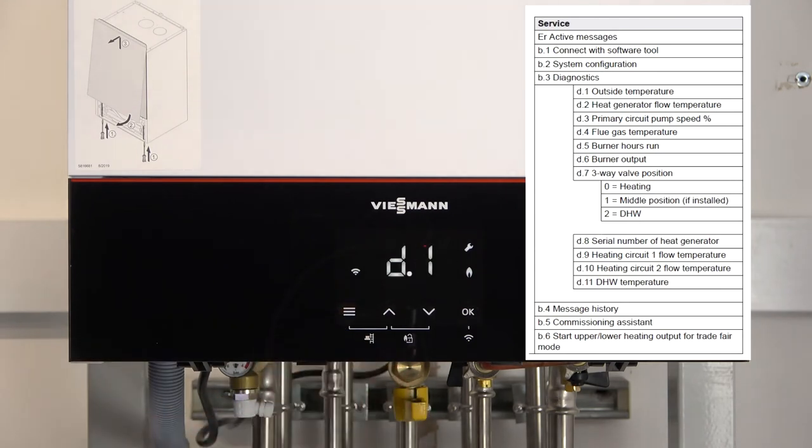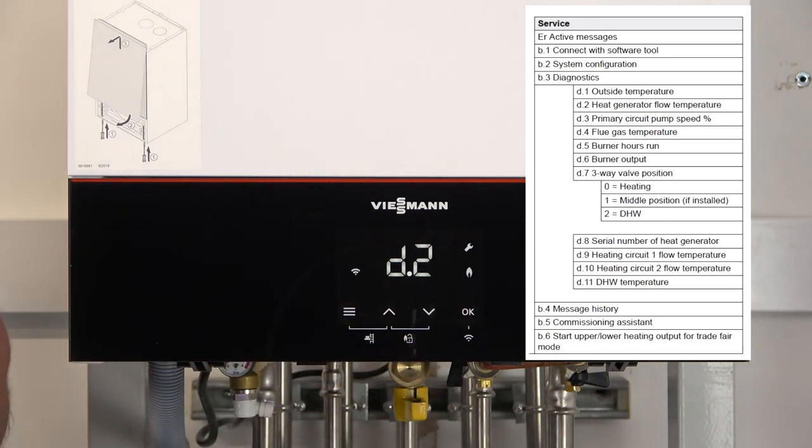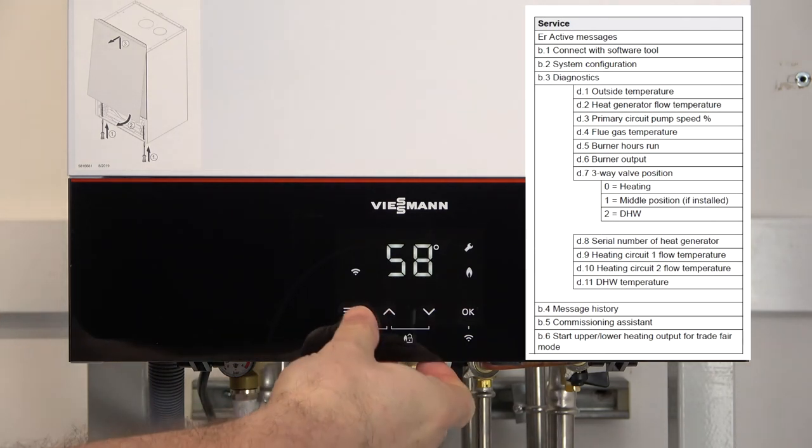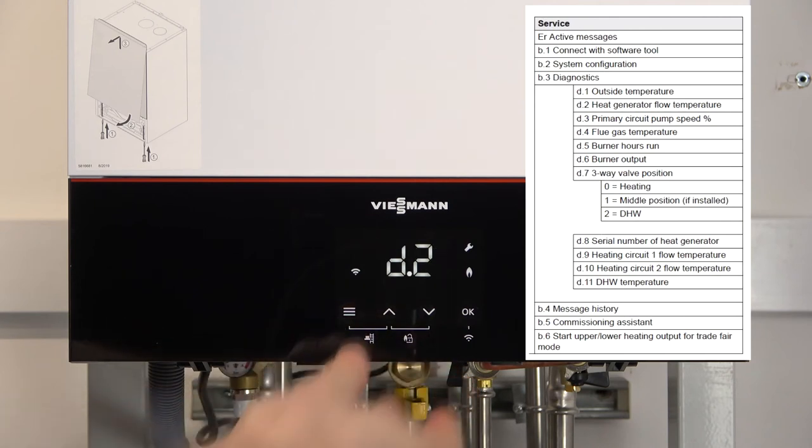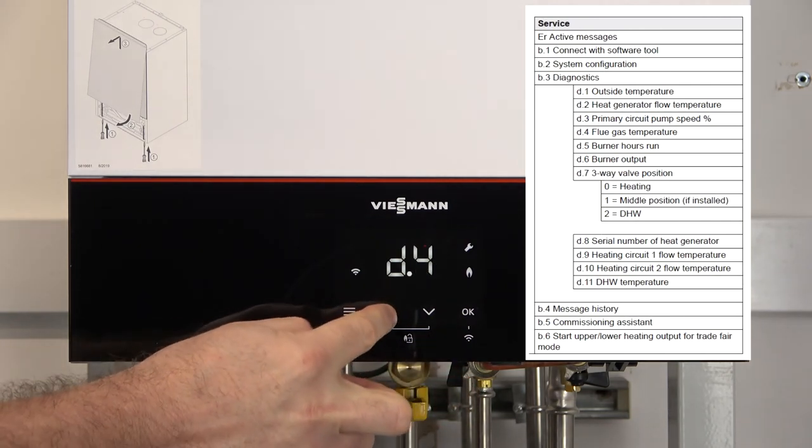To return back out of there, we press the menu button once to get back to the D codes. You can scroll through these now to check whichever parameter you want to see. So this one, for example, is the flow temperature within inside the boiler. So press OK. We can see there this boiler is actually at 57 degrees currently. There are other options in there, and to scroll through, come back out of the menu button and you can scroll through any of these that you'd like to check.